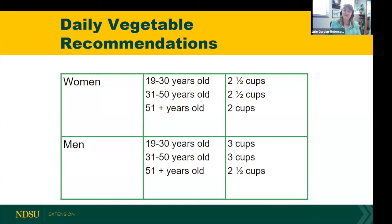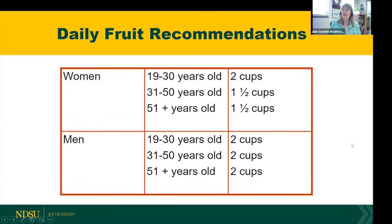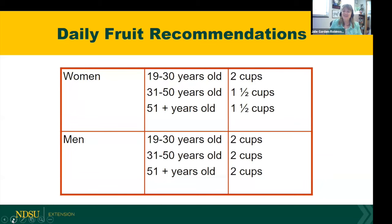For males, the recommendation is three cups up to age 50, then two and a half cups for 51 plus — because as we get older it's much easier to gain weight, so the amounts relax slightly. You can certainly eat more than the minimum — that's always a good thing with fruits and vegetables. For fruit: females 19–30 need two cups, 31 plus need one and a half cups; males need two cups from age 19 on. Some days I do really well, and some days I don't — even with my background in nutrition.